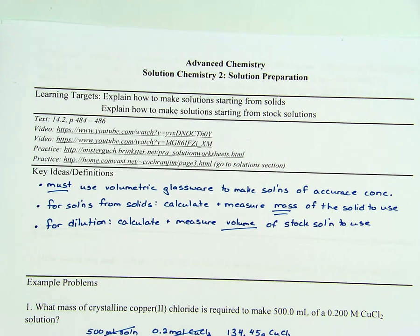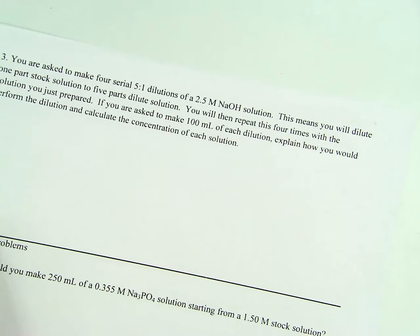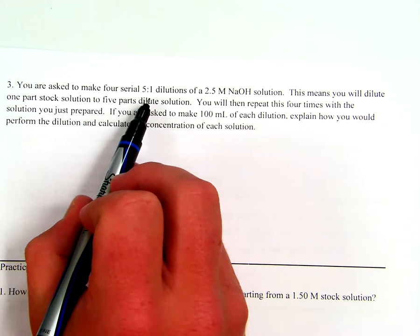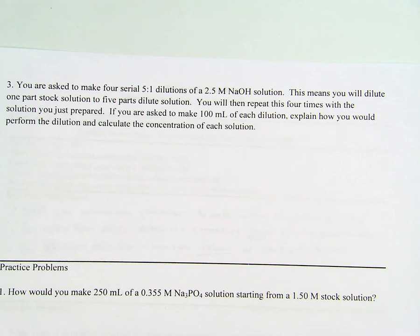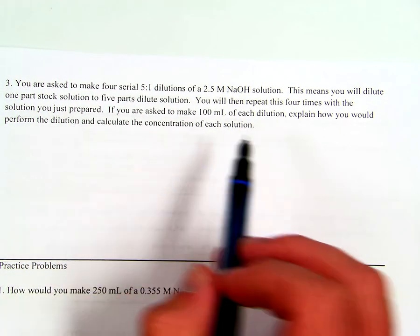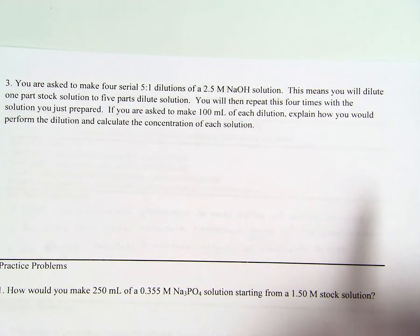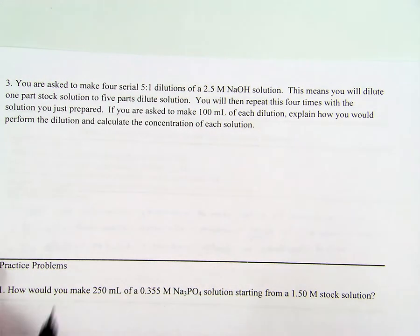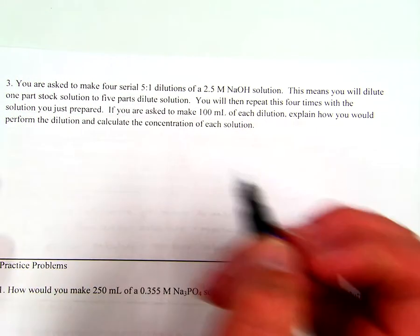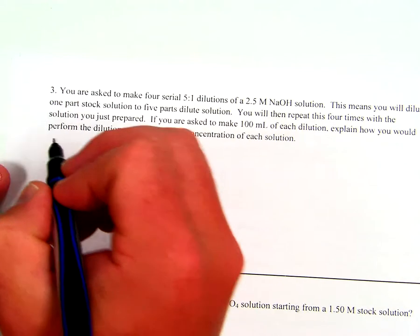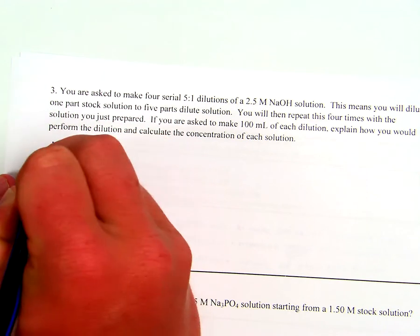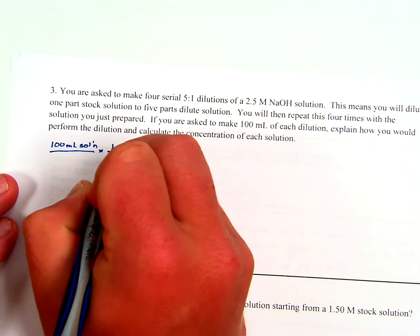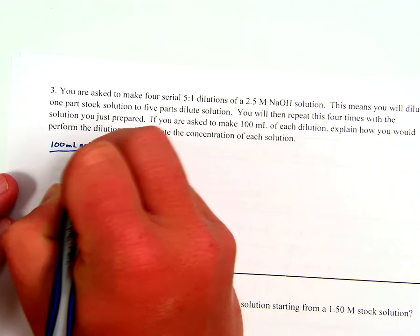The last example problem deals with another dilution, but the question is asked differently. We're asked to make four serial 5-to-1 dilutions of a 2.5 molar sodium hydroxide solution. A 5-to-1 dilution means you dilute one part stock solution to five parts dilute solution, repeated four times with the solution just prepared, making 100 milliliters of each. For the 5-to-1 ratio: 100 milliliters of solution divided by 5 milliliters of solution per 1 milliliter of stock gives 20 milliliters of stock to use.